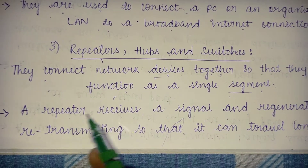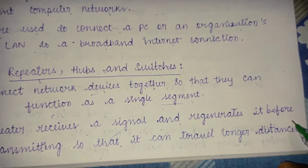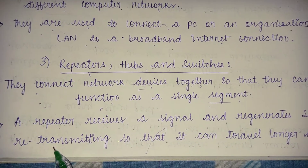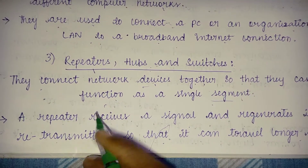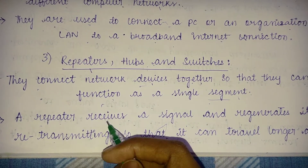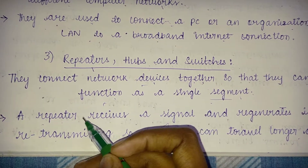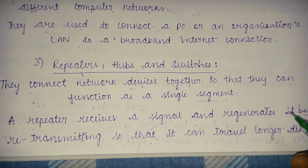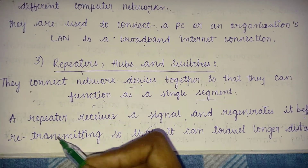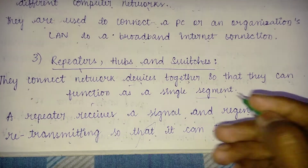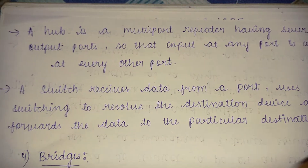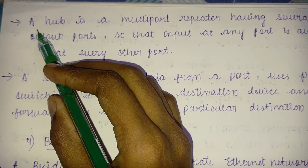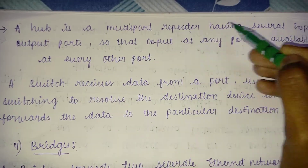Now let's see in detail what a repeater is. A repeater receives a signal and regenerates it before retransmitting, so that it can travel longer distances. This is the purpose of a repeater — to extend the range of a signal.